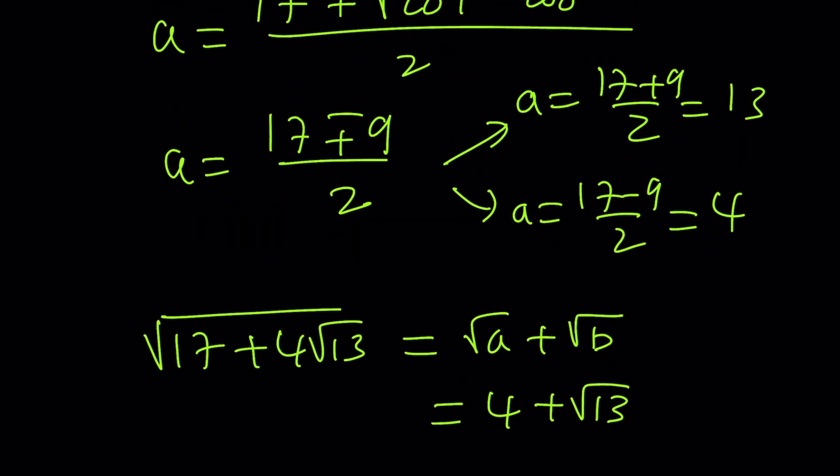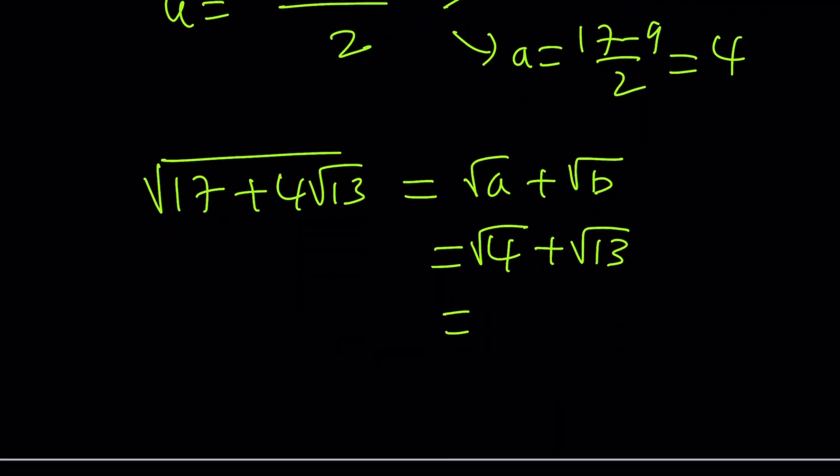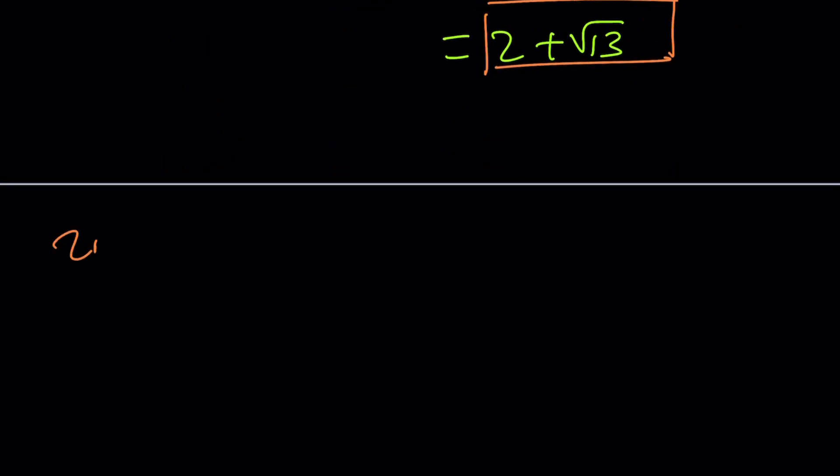So, by the way, I forgot to do one thing. Square root of 4 plus square root of 13, and that will be 2 plus root of 13. My bad. Okay. So that will be the answer. Now let's go ahead and take a look at the second method, and maybe we can briefly talk about the third method.